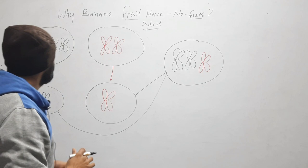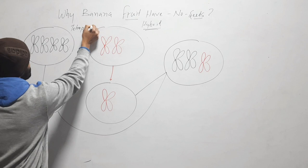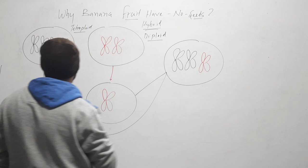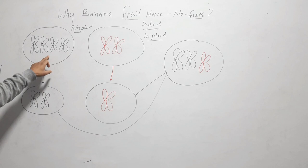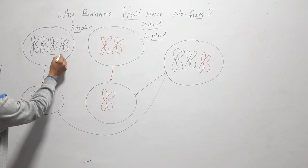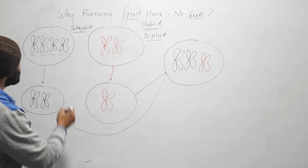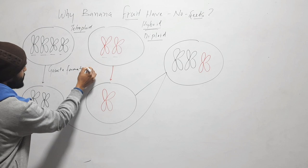We will understand this with a diagram. Here we have the tetraploid species that has four homologous chromosomes — one, two, three, four. The other is a diploid species which has two homologous chromosomes. During gamete formation, which occurs in the flower,